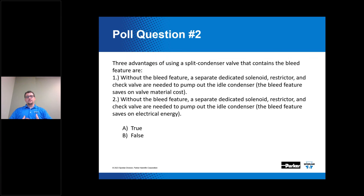Poll question two is a true or false question. Three advantages of using a split condenser valve that contains a bleed feature are: (1) without the bleed feature, a separate dedicated solenoid, restrictor, and check valve are needed to pump out the idle condenser — the bleed feature saves on valve material costs; (2) without the bleed feature, the bleed feature saves on electrical energy; and (3) bleeding the idle condenser reduces the total refrigerant charge in the system.